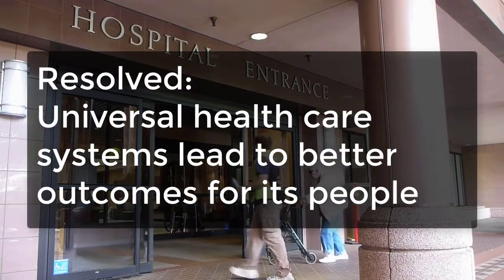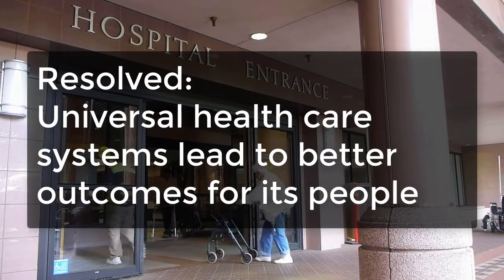When you first start debating fact and value topics, this format will work pretty well. However, as time goes by, you may discover that multiple arguments can make a similar point. Instead of trying to have several contentions, you can group like arguments together as subpoints under a single contention. Let's look at another example — resolved: universal healthcare systems lead to better outcomes for its people. You start to do some research and discover several data points centered around the economic benefits of universal healthcare systems. While you could break them into their own contentions, it may be more effective to do something like this.